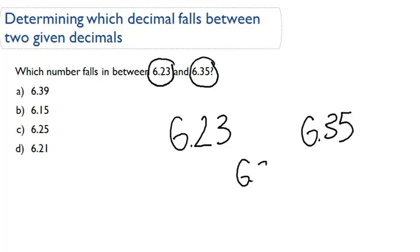If we look at the first answer choice, 6.39, if we can compare this, these numbers are the same. The ones place and the tenths place are the same as 6.35.